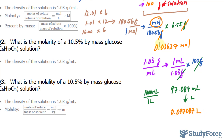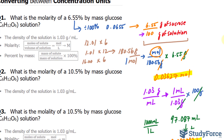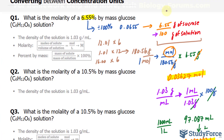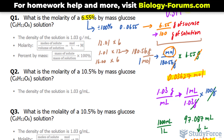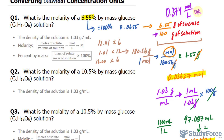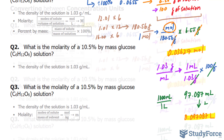Now all I have to do is divide moles by liters: 0.03627 divided by 0.097087. Rounding to three significant figures — since our original data had three digits — we get 0.374 moles per liter, or 0.374 M. That's the answer to question number one. If you'd like to see questions two and three, make sure you watch part two of this series. We'll see you soon.